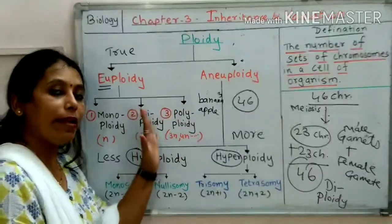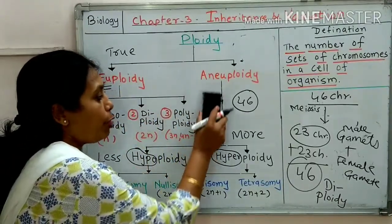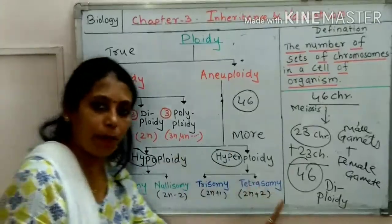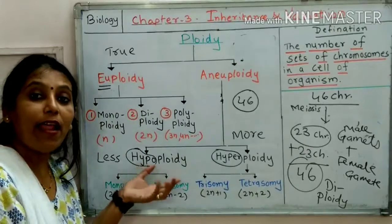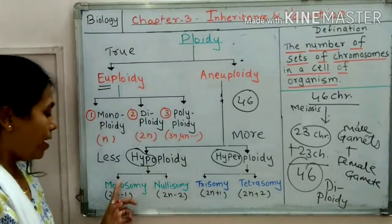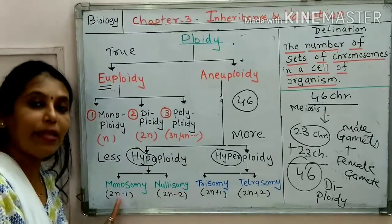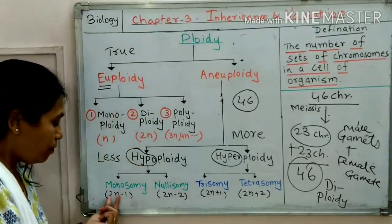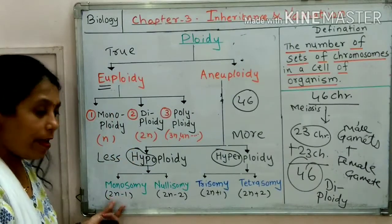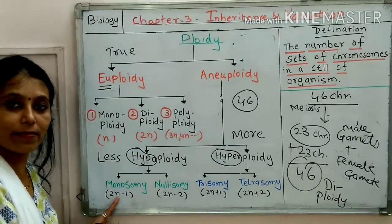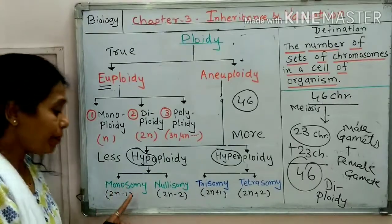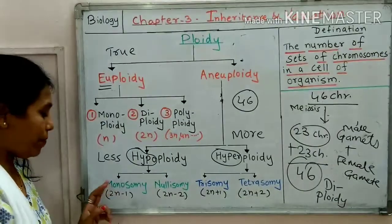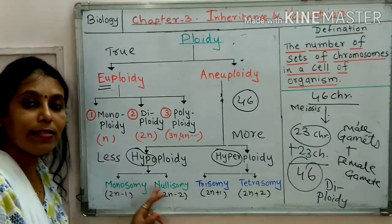Now come to aneuploidy. In aneuploidy: hypoploidy and hyperploidy. Hypo means less number of chromosomes are present. In hypoploidy, the first example is monosomy — mono means single. We know the normal condition is 2N. If one chromosome is less, then it is called monosomy, which is 2N minus 1. If 2N minus 2, that is nullisomy.